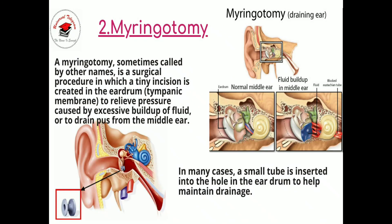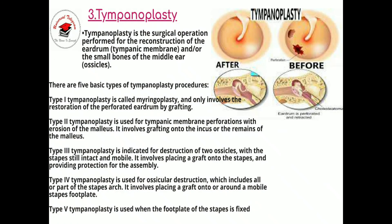Next is myringotomy — sometimes also called a grommet procedure. It is a surgical procedure in which a tiny incision is created in the eardrum to relieve pressure caused by excessive buildup of fluid or to drain pus from the middle ear. It is commonly used for draining ear discharge. In many cases, a small tube is inserted into the hole in the eardrum to help maintain drainage.